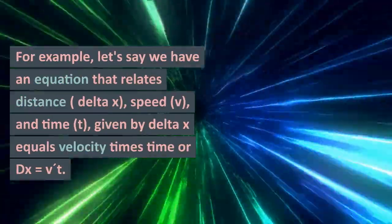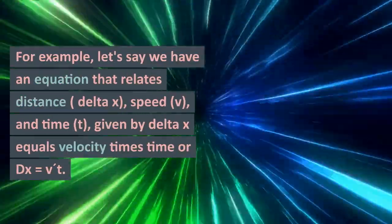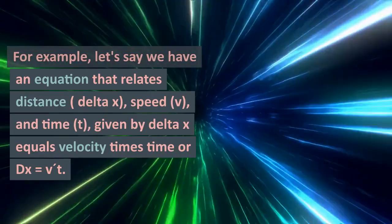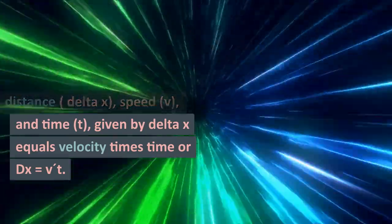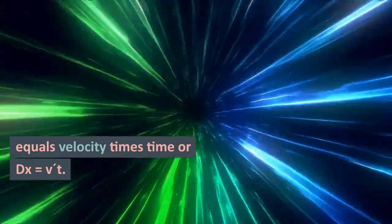Example of dimensional analysis. For example, let's say we have an equation that relates distance, delta x, speed, v, and time, t, given by delta x equals velocity times time, or dx equals vt. We can analyze the dimensions of each quantity involved in the equation.